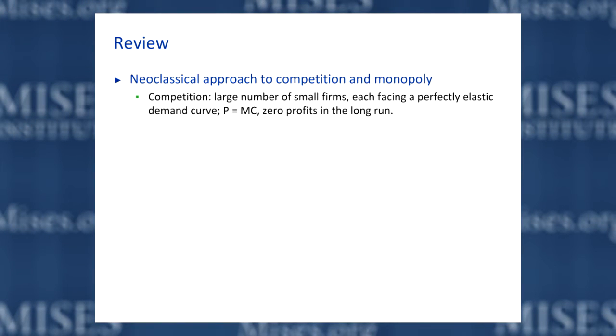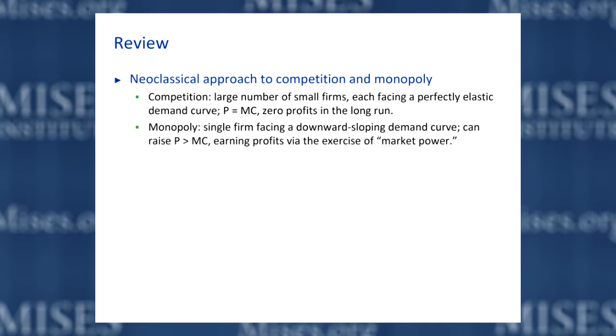Let's start by reviewing briefly what we've learned up to this point. In the neoclassical approach to competition and monopoly, competition is a situation in which you have a large number of very small firms, each of which faces a perfectly elastic demand curve for its product. Each firm can sell as much or as little as it wants at the going price without influencing that price at all — the firms are what they call price takers. The result is that all firms set prices equal to marginal cost in order to maximize their profits, and in the long run, all firms earn exactly zero profit.